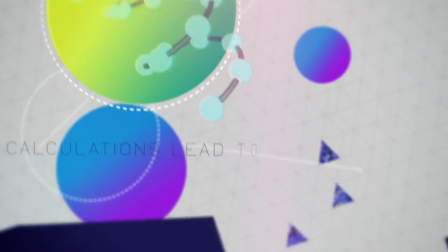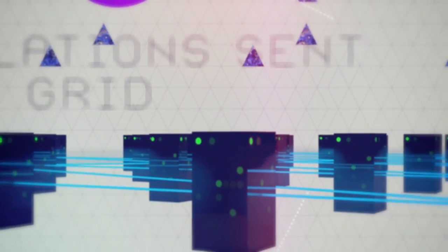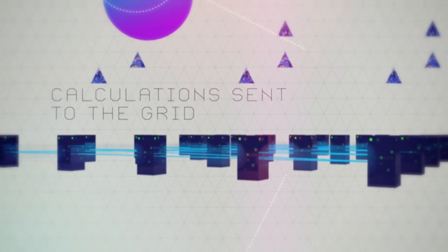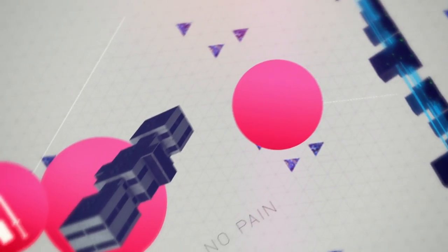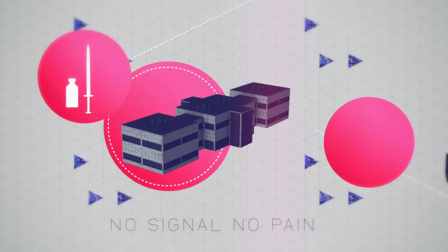Computations are then needed to transform this information into the three-dimensional structure of the cone snail venom. This is done by sending thousands of calculations to the grid, a network of computer servers distributed across Europe. The available servers take care of the calculations and the results are sent back to the researcher. In the long run, this knowledge could lead to new local anaesthetics used in hospitals.